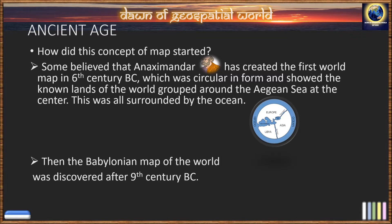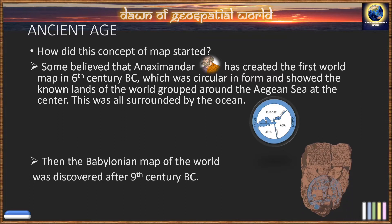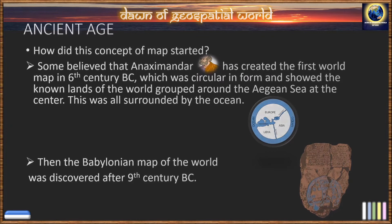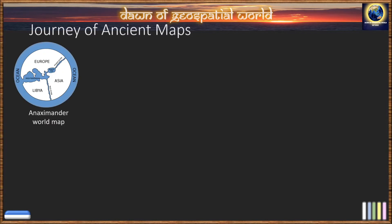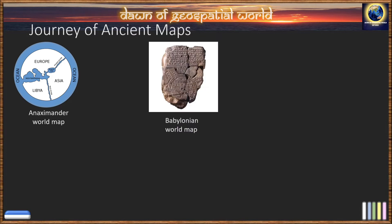These are maps which were created on a clay tablet, drawn with very accurate surveying techniques. In the journey of ancient maps, Anaximander made his world map to improve navigation and trade around the Mediterranean and Black Sea. He was known as the first cartographer to develop a map. Then comes the Babylonian world map.